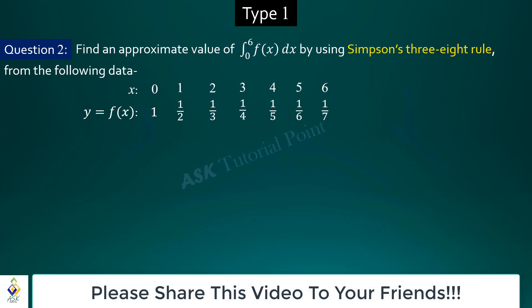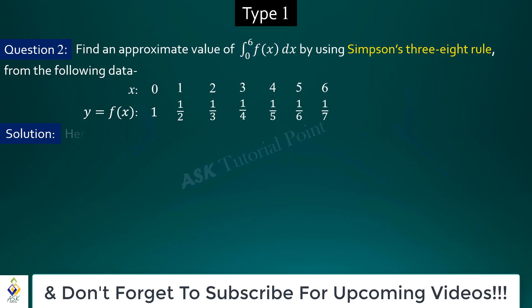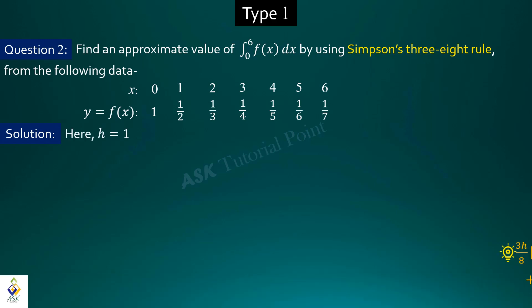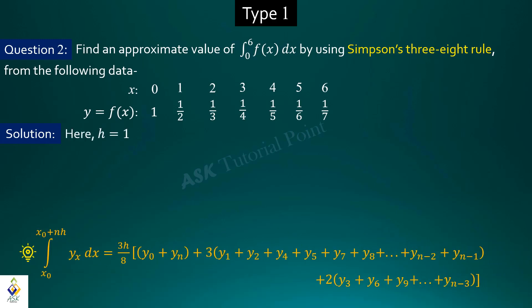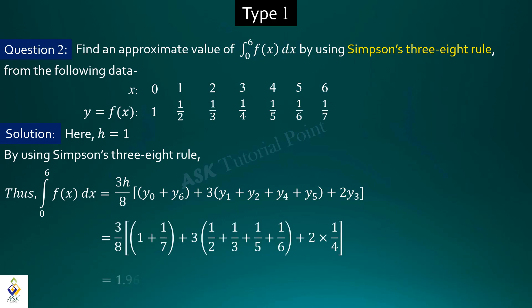I will discuss the next problem of type 1 — question number 2. Given the values of x and f(x), we need to find the integral from 0 to 6 of f(x) dx using Simpson's three-eighth rule. Using the defined formula for Simpson's three-eighth rule and placing the calculated values in the table, the required answer is 1.9666.